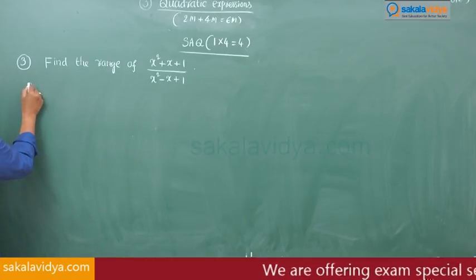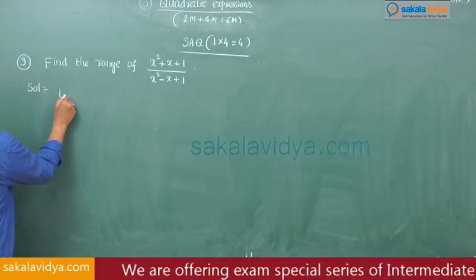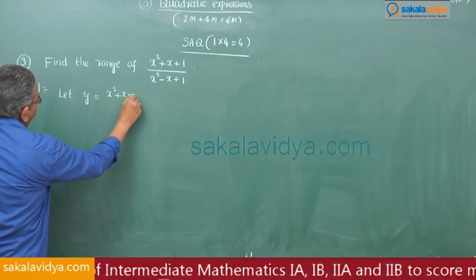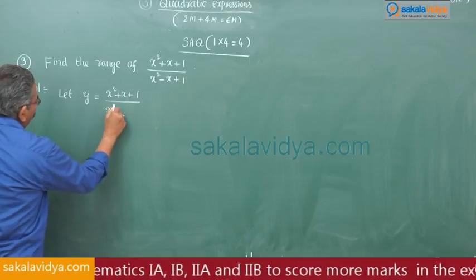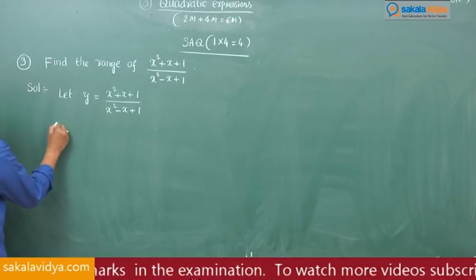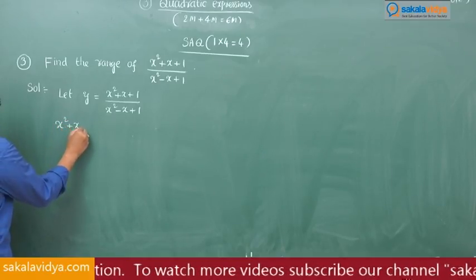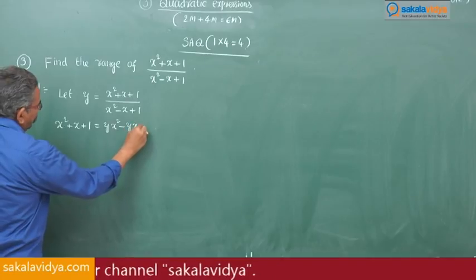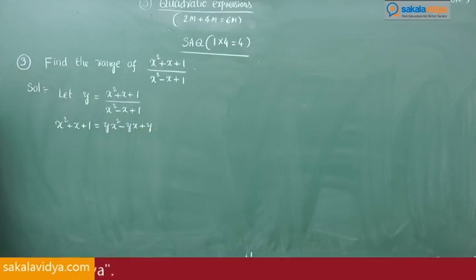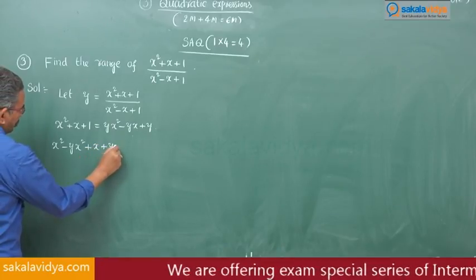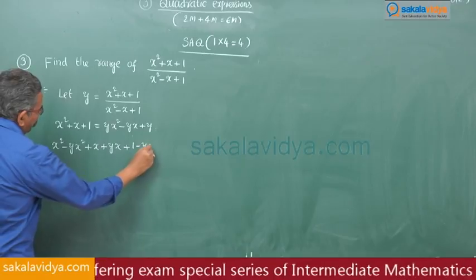Let y = (x² + x + 1) / (x² - x + 1). By cross multiplication, we get x² + x + 1 = yx² - yx + y. Rearranging: x² - yx² + x + yx + 1 - y = 0.